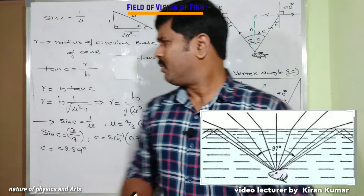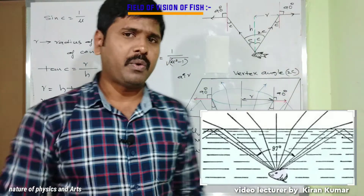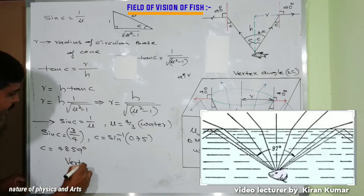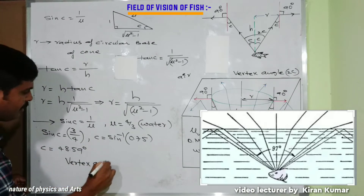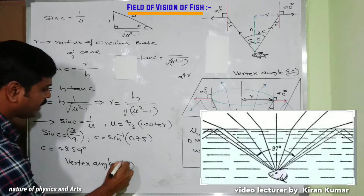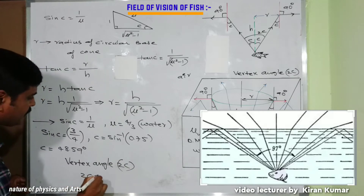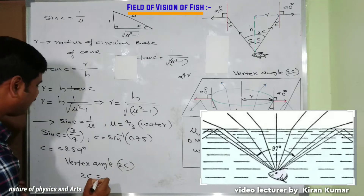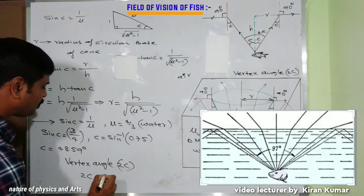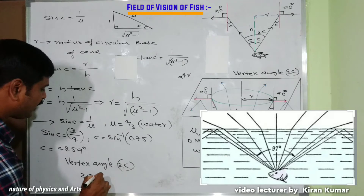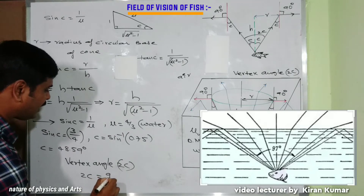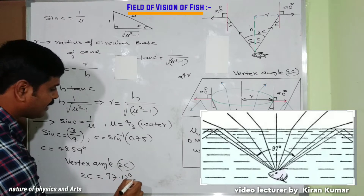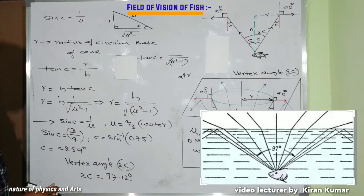The vertex angle of the cone is 2C = 2 × 48.56 degrees ≈ 97.12 degrees. This is the vertex angle of the inverted cone through which the fish sees the outer world.